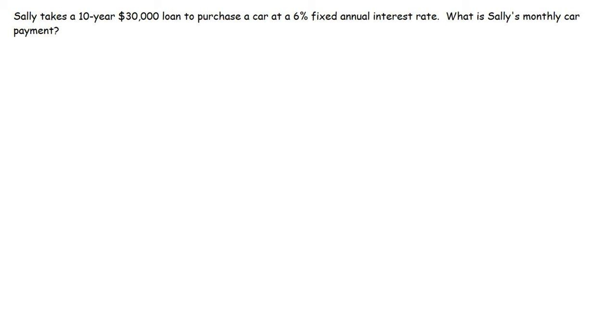Feel free to pause the video if you want to try this problem. So the formula that we're going to use is this equation: the monthly car payment is going to be the principal times the fixed annual interest rate divided by n. Now n is the number of payments that will be made in one year. Since we're trying to calculate the monthly payment and there's 12 months in a year, n has to be 12.